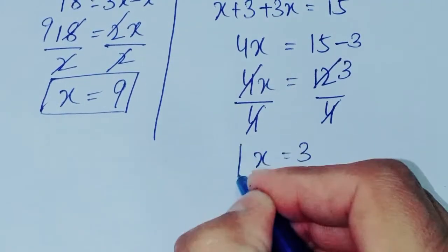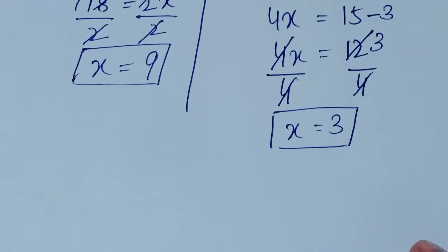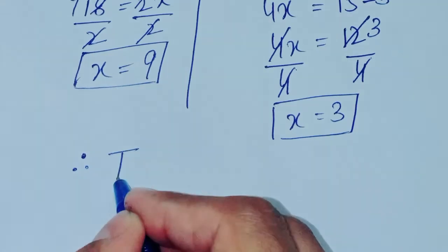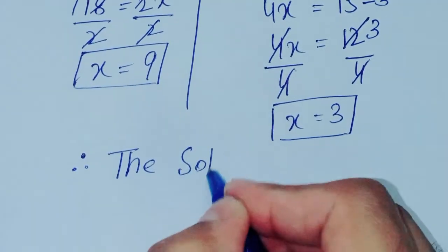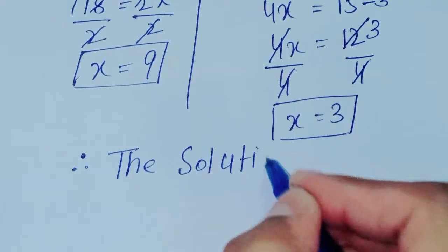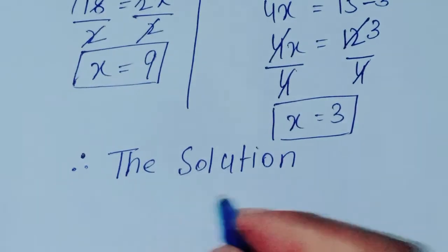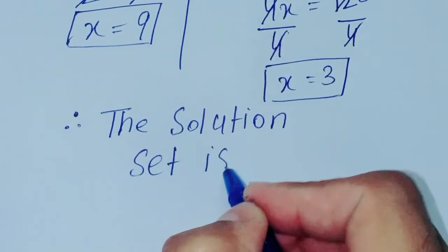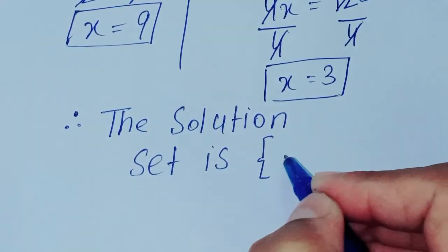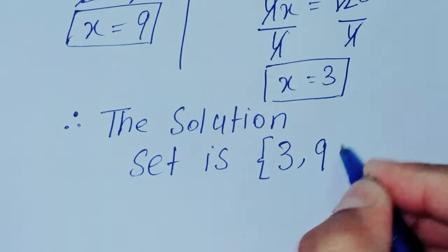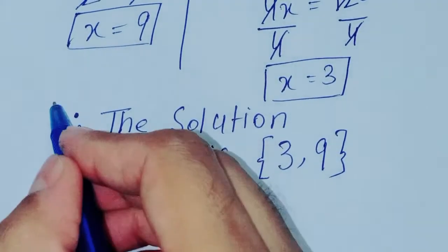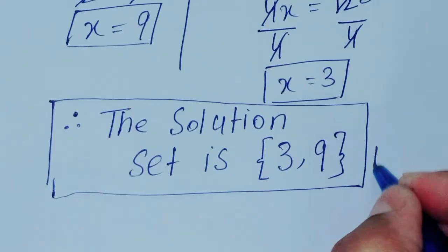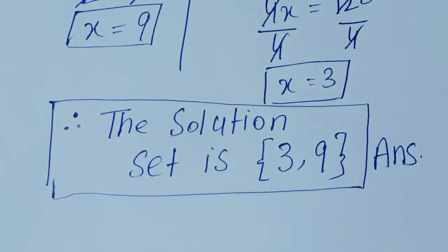So x is equal to 3 from Case 2, and from Case 1 x is equal to 9. Hence the solution set is {9, 3}. This is the answer to this question.